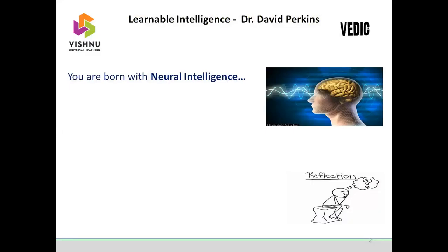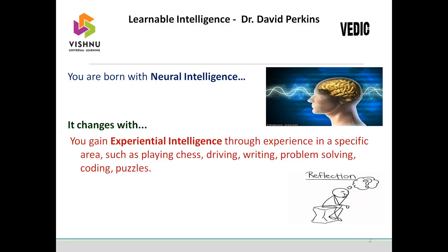Let us start with learnable intelligence. What is learnable intelligence? It is a terminology coined by Dr. David Perkins. Everyone is born with neural intelligence — it is a minimum intelligence every newborn kid will have. This learnable intelligence helps the neural intelligence to develop wider and wider. Learnable intelligence is a combination of experiential intelligence and reflective intelligence.